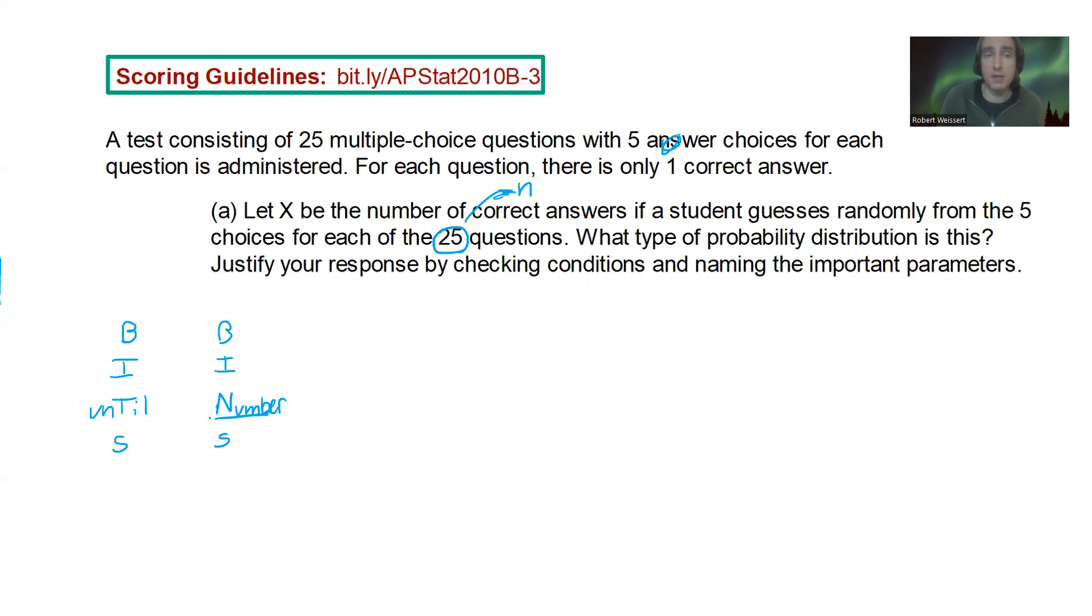Now, what is our probability of success? Our probability of success would be getting the question right. And if there are five answer choices for each question, then the probability is going to be one out of five or 0.2. Okay. So the probability of success equals 0.2 or one fifth and our number of trials n equals 25.